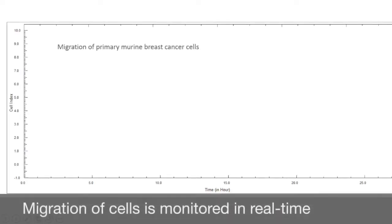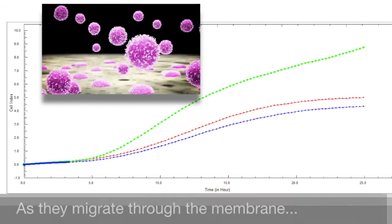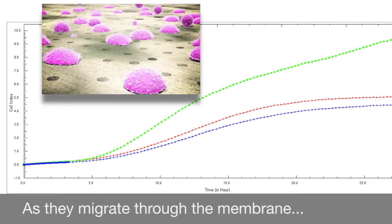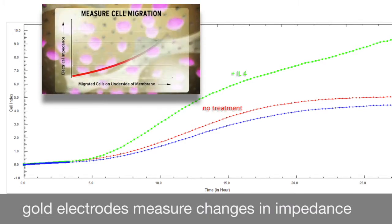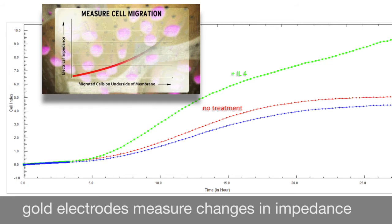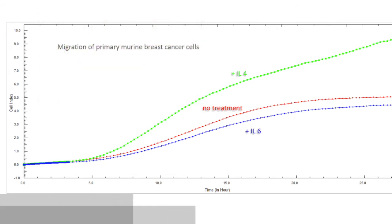Cell migration is observed in real time. As cells pass through the membrane, a very low alternating current flows through the electrode network without affecting cell status and viability. The detected impedance value will be directly proportional to the number of migrating cells that have adhered to the electrode surface.